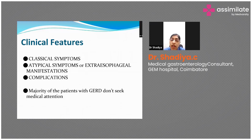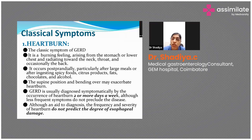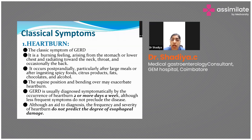Clinical features are divided into classical symptoms, atypical or extraesophageal manifestations, and complications. Heartburn is the most common symptom — a burning feeling arising from the stomach or lower chest and radiating towards the neck, throat, and occasionally the back. It usually occurs postprandially after a large meal or after ingesting spicy, citrus, fatty foods, chocolate, or alcohol. GERD is diagnosed symptomatically by heartburn occurring two or more days a week, although less frequent symptoms do not preclude the disease.